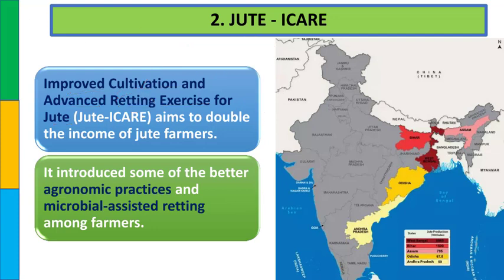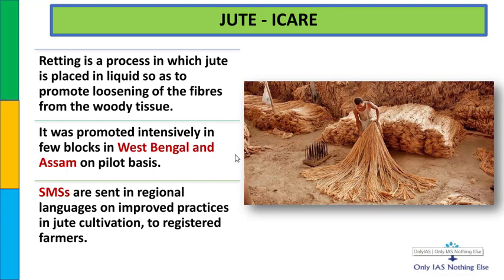Jute को बढ़ावा देना है. इसमें basically West Bengal और Assam में pilot basis पर इसको start किया गया है. Advanced technology की basis पर jute से jeans वगैरह भी बनाने लगे हैं. Jute के multiple purpose uses हैं, इसलिए jute को support करना चाहिए. इस scheme में जो भी registered farmers jute eye care के अंदर होंगे, उनको facilities दी जाती हैं.